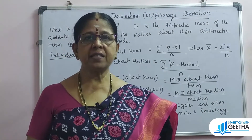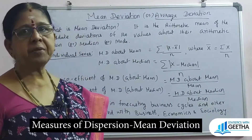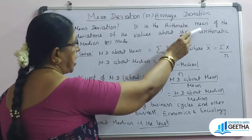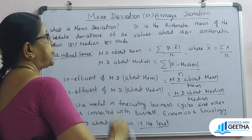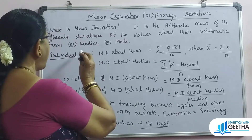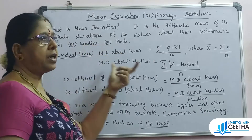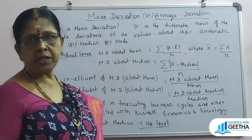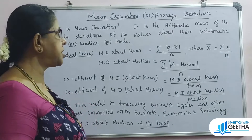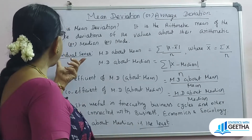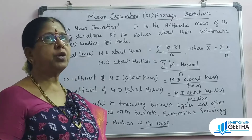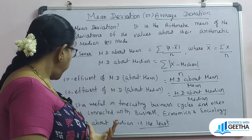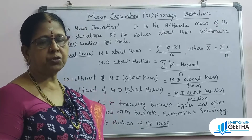Welcome to Statistics with Geeta. We are going to see the third measure of dispersion, that is mean deviation or average deviation. Mean deviation is the arithmetic mean of the absolute deviations of the values about their arithmetic mean, median, or mode — that is, the modulus value of the variable values from either the arithmetic mean, median, or mode, divided by the number of observations.